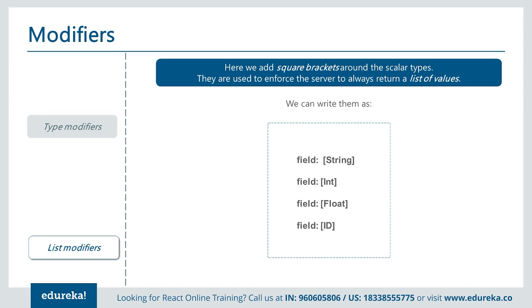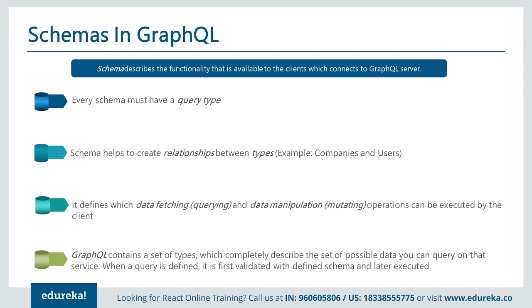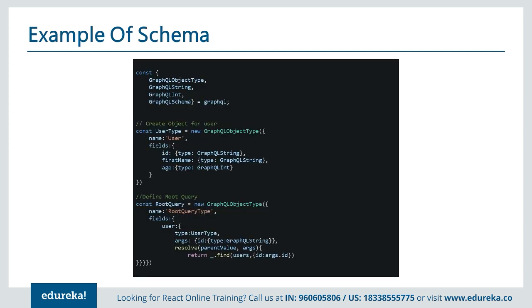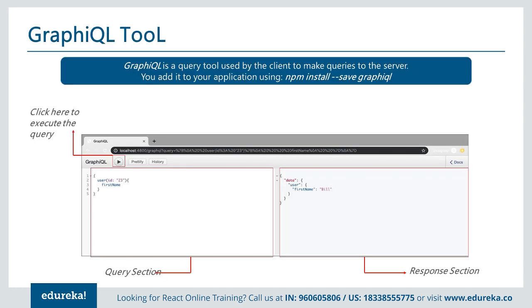Schema is the main part of GraphQL. The server-side schema describes functionality available to clients connecting to the GraphQL server. Every schema must have a query type. Schema helps create relationships between types — for example, companies and users — and defines what data-fetching and data-manipulation operations a client can execute. GraphQL contains a set of types that completely describes the set of possible data you can query. A query is first validated against the defined schema and then executed. On the back end, we define a user type, root queries, and resolver functions that return the data.